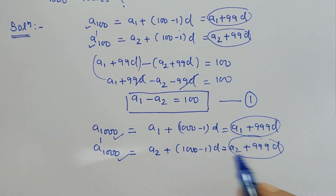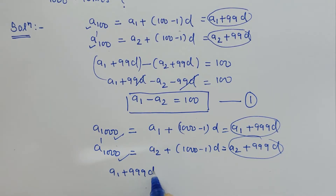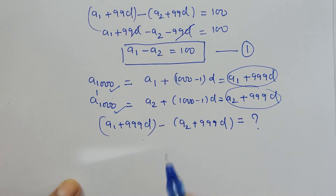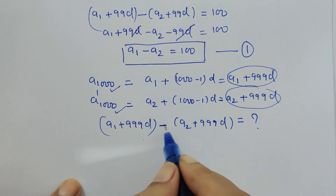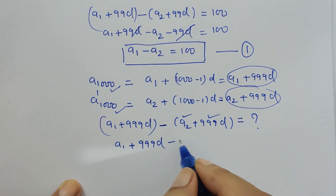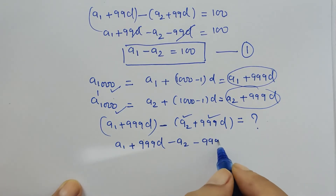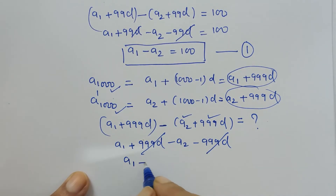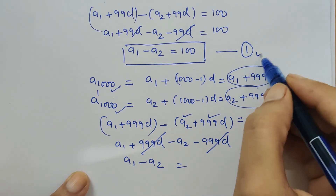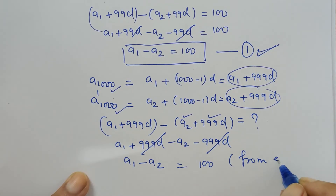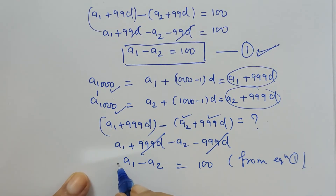We need to find the difference between these two terms: (a1 plus 999d) minus (a2 plus 999d). Expanding: a1 plus 999d minus a2 minus 999d. The 999d terms cancel, leaving a1 minus a2, whose value we already know from equation 1, which is 100.